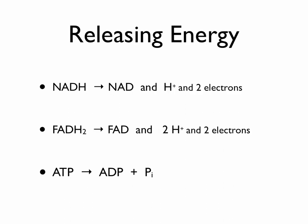The formulas for releasing energy are just the opposite. NADH becomes NAD+ and H+ and two electrons, and that releases energy. FADH2 becomes FAD and two hydrogen ions and two electrons, and that releases energy. And of course, ATP breaks down into ADP and Pi to release energy.